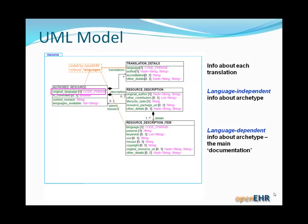The last group are dependent on language — we're talking about purpose, keywords, use, and so on. So when an archetype translation is made, all of these descriptive items are translated into the new language. You can see that in all of these classes there's an other details property, defined as a hash of strings, which provides extensibility at all levels of documentation of the archetype.